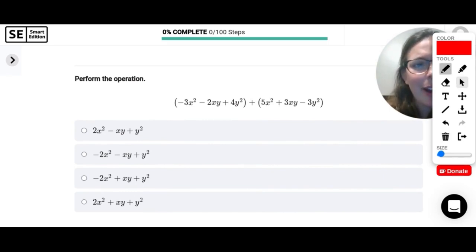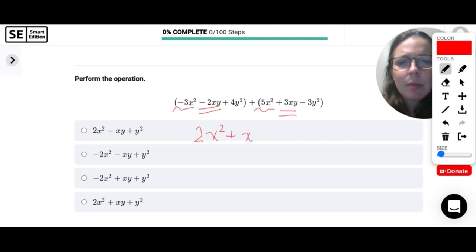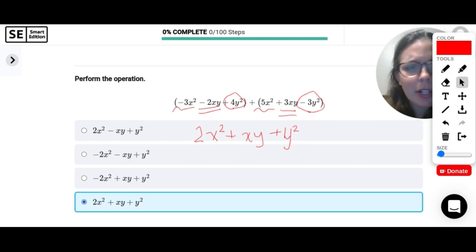Let's perform the operation. So we are adding these polynomials. So the parentheses actually don't even matter. We can just start combining like terms. So I see negative 3x squared plus 5x squared. So negative 3 plus 5 would be a positive 2x squared. And then I have negative 2xy plus 3xy. So negative 2 plus 3 would be a positive 1xy. And lastly, I have positive 4y squared minus 3y squared. So 4 minus 3 is a positive 1. So this would just be positive y squared. So 2x squared plus xy plus y squared.